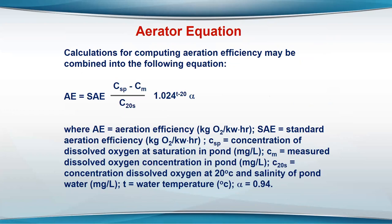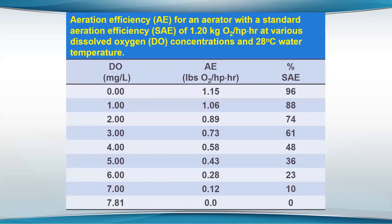There's an equation for calculating how much oxygen the aerator will actually transfer under operating conditions. If the aerator has been rated in a test in clean water to transfer a certain amount — say 1.2 kilograms of oxygen per horsepower hour — at zero dissolved oxygen it would actually transfer about 96% of that value. I noticed a slide error — it should be kilograms of oxygen per horsepower hour; that was just an example.